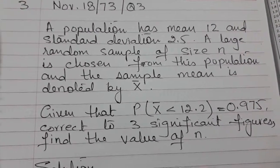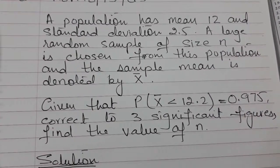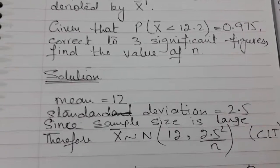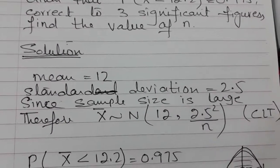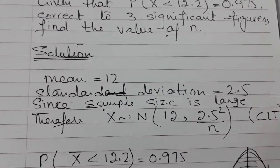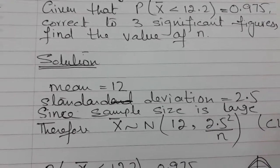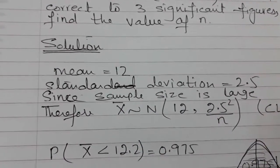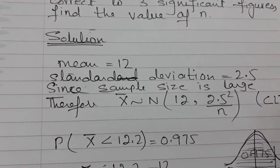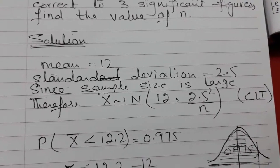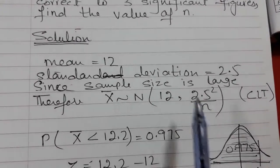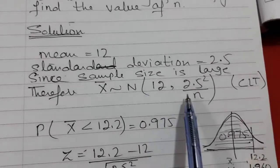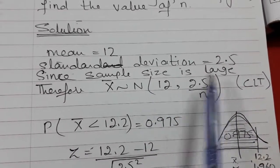You know mean, standard deviation, and probability, which is 0.975. As usual, first put down the information: mean is 12, standard deviation is 2.5, and sample size is large. So by the central limit theorem your distribution will be approximately normal with mean mu and variance sigma squared over n. This is extremely important — if you do not write the distribution correctly, you will not apply the correct values in the Z formula.